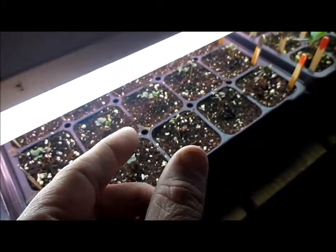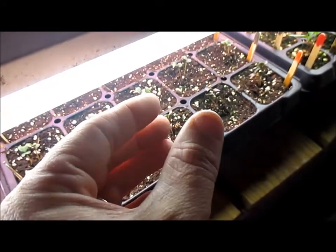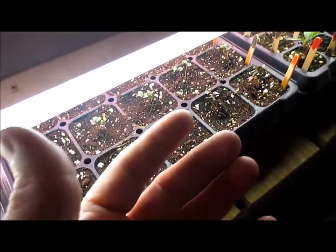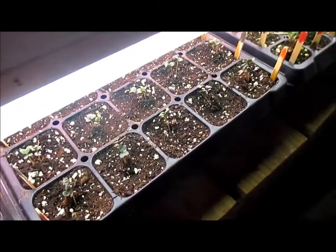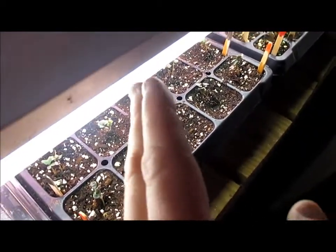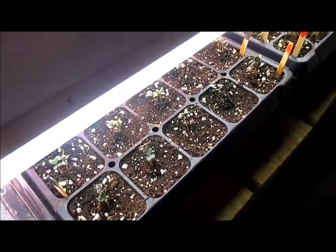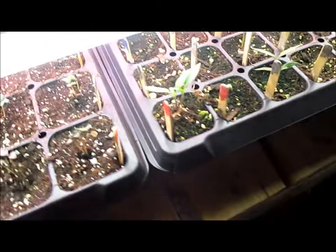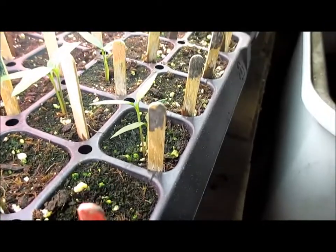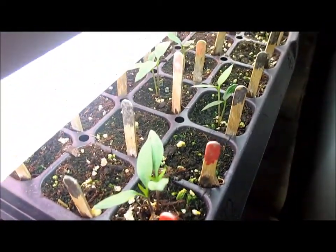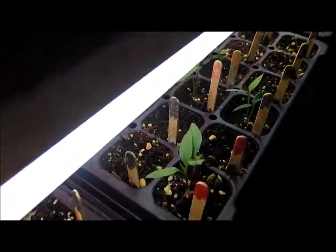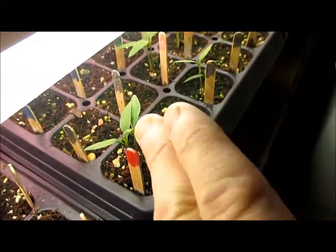When the leaves are bigger there's more surface area to absorb the sunlight or artificial light from these fluorescent bulbs, so they don't need to stretch because there's enough of a leaf system to absorb the light's energy. The peppers aren't as bad. These are growing pretty much straight up because the leaves are much bigger, so they don't have to stretch as much.